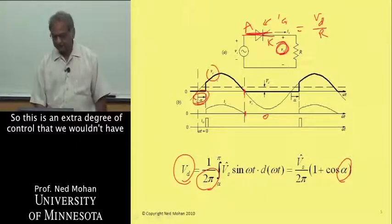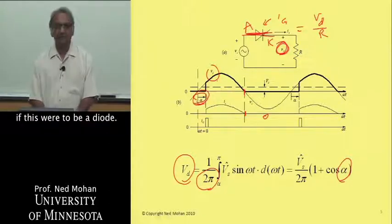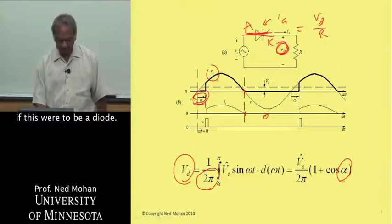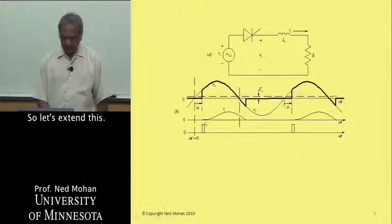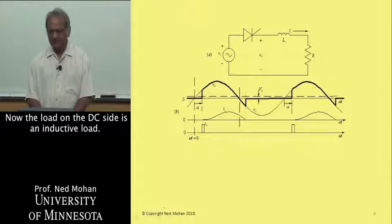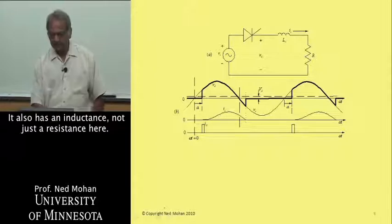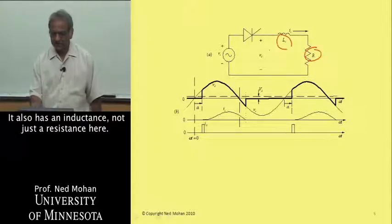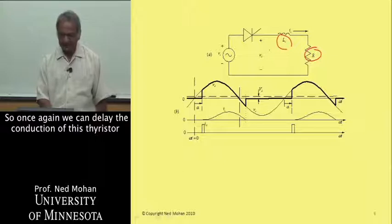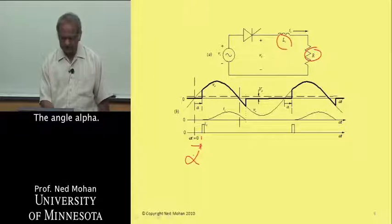We have control over the average value of V_d by controlling angle alpha. This is an extra degree of control that we wouldn't have if this were a diode. Now let's extend this: the load on the DC side is an inductive load — it also has an inductance, not just a resistance. Once again, we can delay the conduction of this thyristor by angle alpha at which the gate pulse comes.